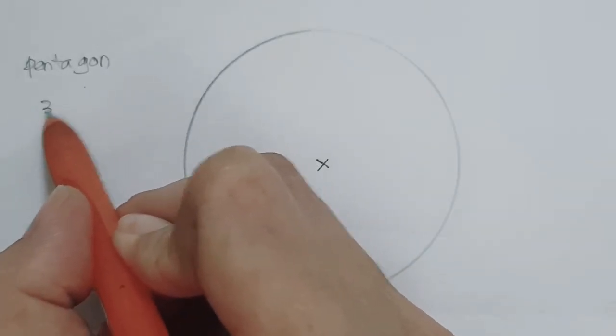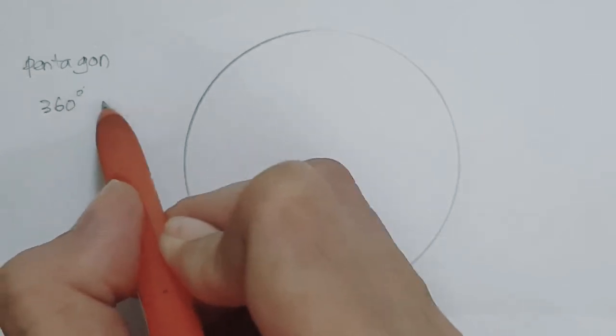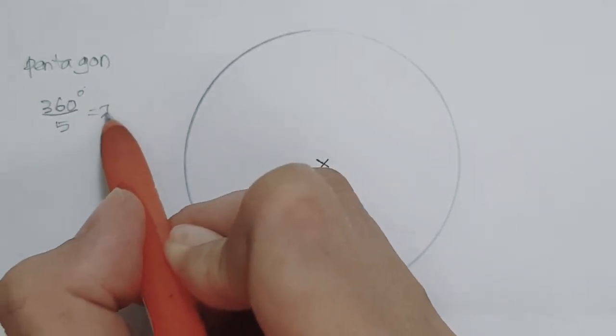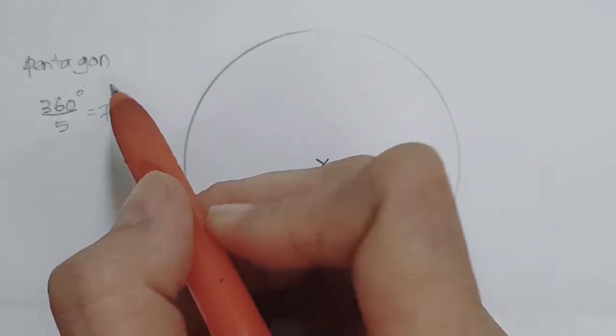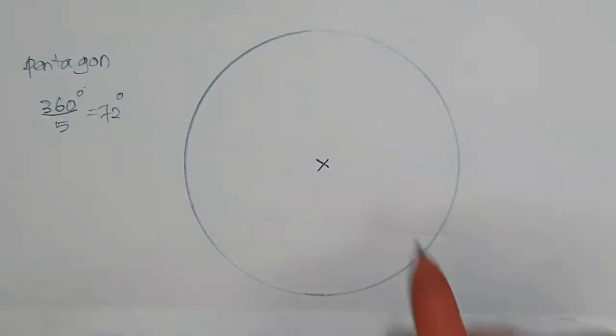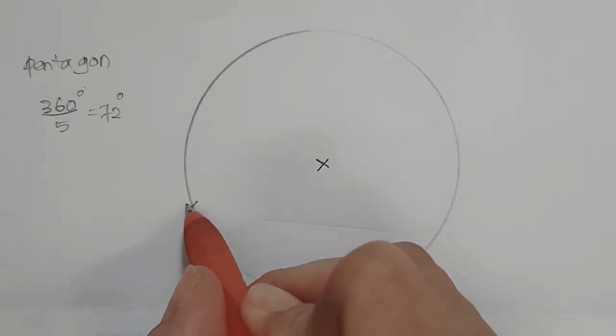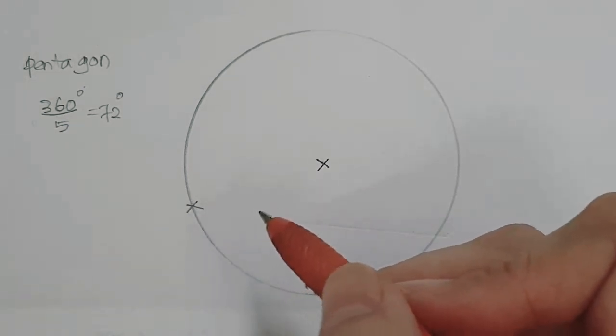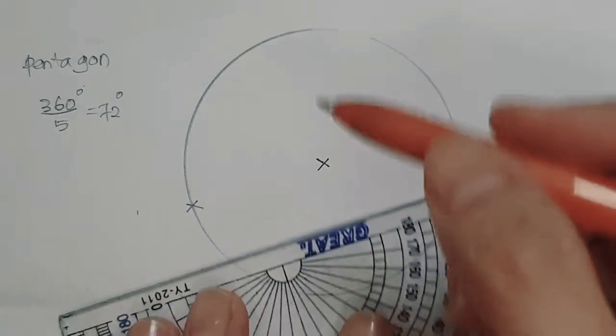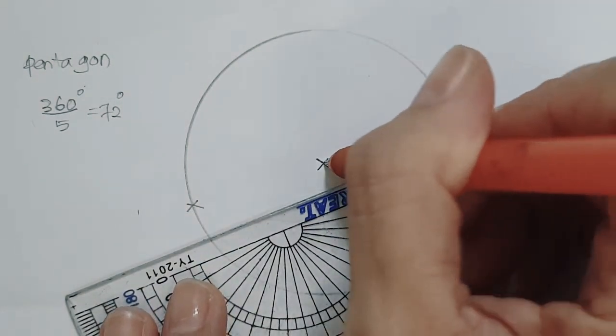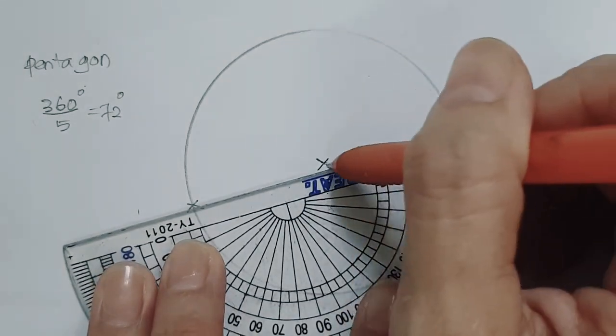So we just take 360 degrees divided by five, we get 72. Okay, so let's measure 72 degrees. But first we're going to create a baseline so that we can measure our 72 degrees using the protractor.